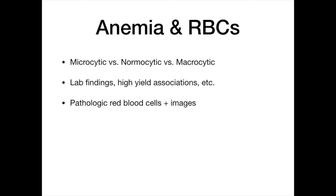So what are we going to cover today? First, we'll start with an overview slide showing the three different ways we categorize anemia. Then we'll talk about lab findings — specifically how to use labs to differentiate one type of anemia from another. We'll cover high-yield clinical associations, and finally we'll look at pictures of red blood cells, because a board favorite is showing you a picture and asking a question. You've got to know what you're looking at.